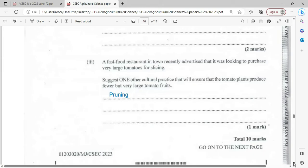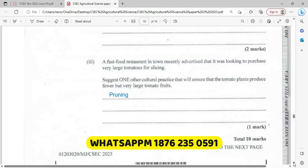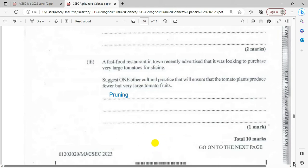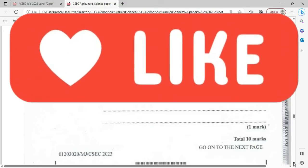A fast food restaurant in town recently advertised that it was looking to purchase very large tomatoes for slicing. Suggest one other cultural practice that will ensure that the tomato plants produce few but very large fruits. That's going to be pruning. When you prune, the plant will definitely produce less fruit, but the fruits will definitely be larger.